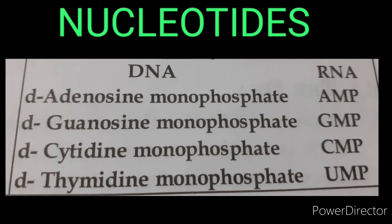Now, let us name the nucleotides present in RNA. In RNA, nucleoside plus phosphoric acid forms a nucleotide. Adenosine combined with phosphoric acid forms adenosine monophosphate, also called adenylic acid. Guanosine combined with phosphoric acid forms guanosine monophosphate, also called guanylic acid. Uridine combined with phosphoric acid forms uridine monophosphate.